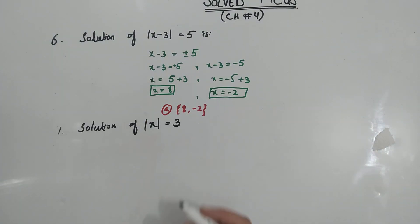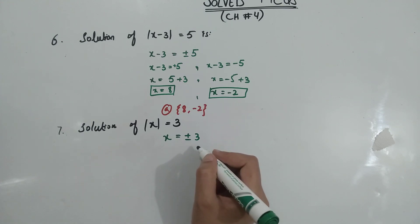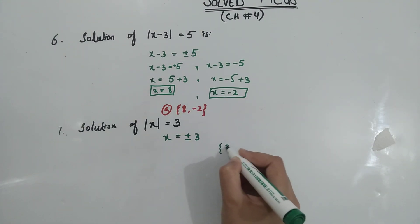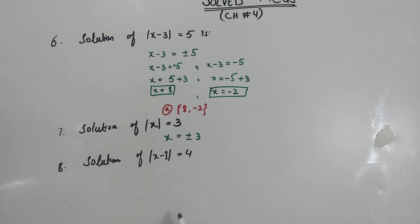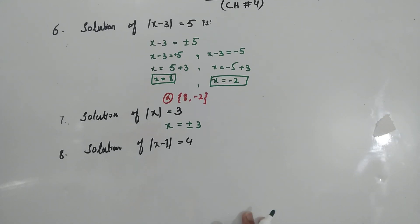Solution of |x| = 3, this is option a. Part number 8: the solution is |x-1| mode equal to 4.